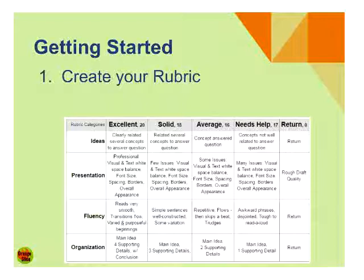Getting started: the first thing you want to do is create a rubric. Here I have a rubric with ideas, presentation, fluency, organization. You can see on top the performance categories — excellent, solid, average, et cetera. This rubric can be any size you like. If you want to do it in just two performance columns — excellent and solid — great. If you want to call it A and B, do that. Whatever you want. The number of rubric categories can be one or fifteen, as many as you need. But the more categories you put, the longer the grading time.